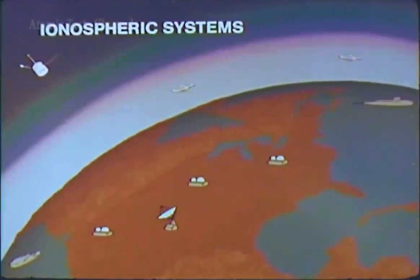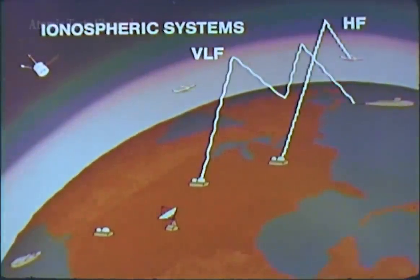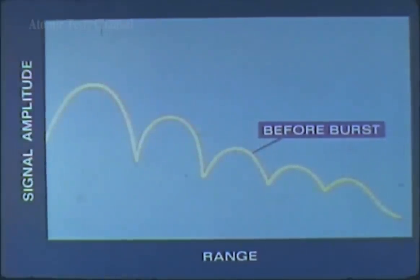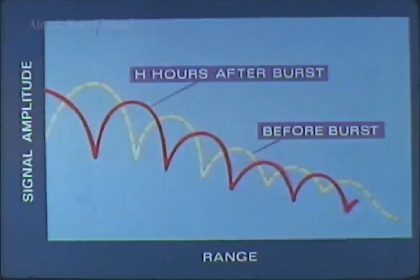A second general class of communication systems is dependent on the ionosphere. Changes in waveguide excitation factors and signal phase alterations may actually result in improved communications, but in an unpredictable fashion, since the ionospheric D region is easily altered by delayed radiation from high-altitude debris. VLF circuits may be affected for many hours.